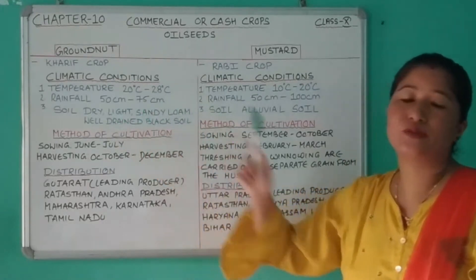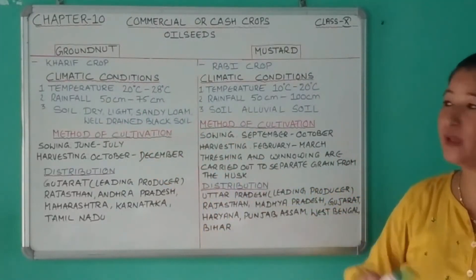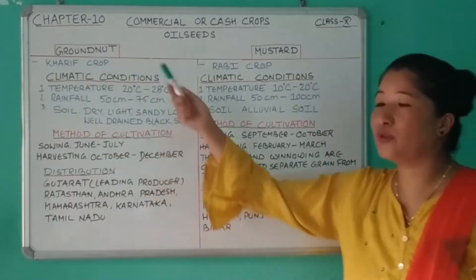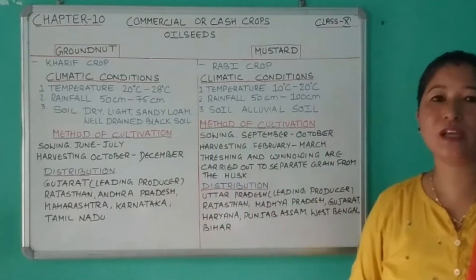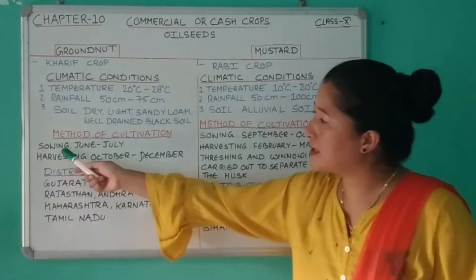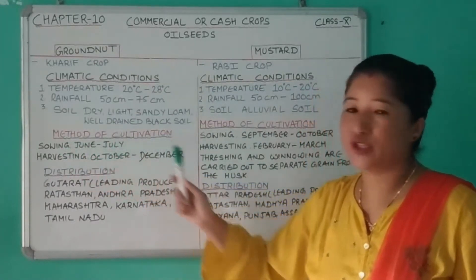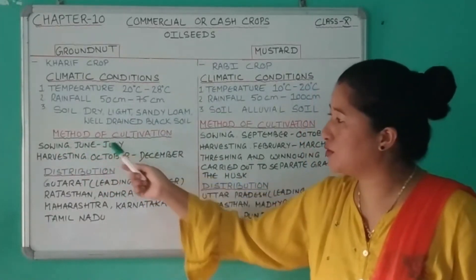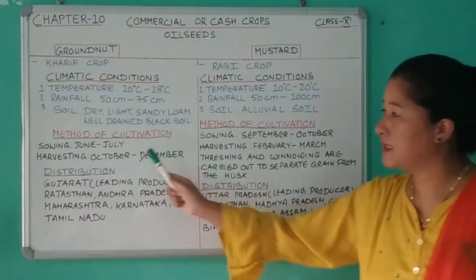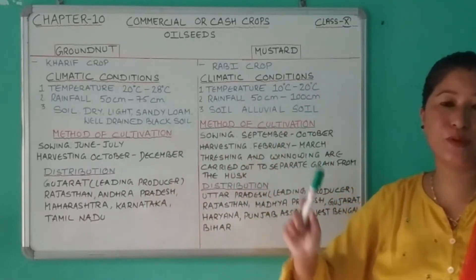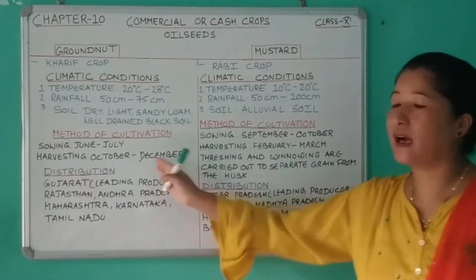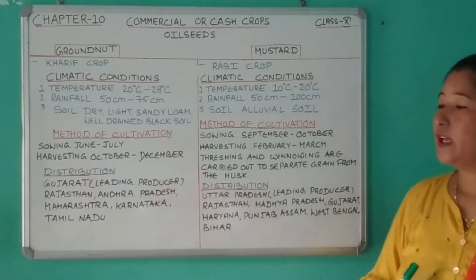The soil required is dry, light, sandy, low, or well-drained black soil. The method of cultivation: groundnut is grown in the rainy season and matures within four to five months. The sowing months are June to July, and it is harvested in October to December. During harvesting, dry weather conditions are very essential.